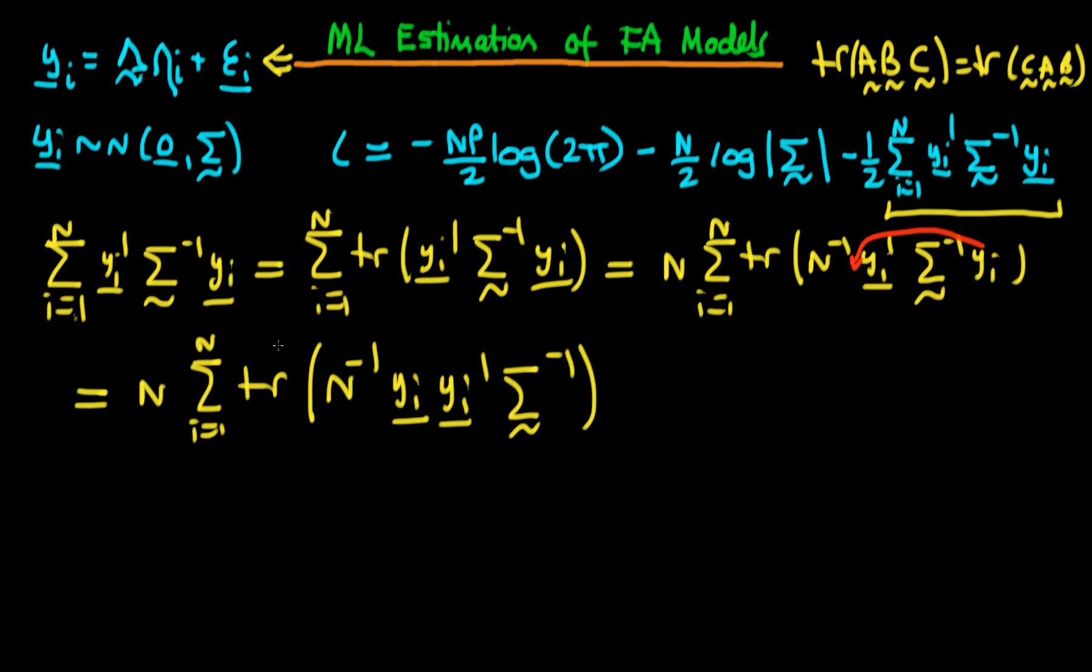You can actually take the trace to the outside of the summation because it doesn't matter whether you take the trace of the sum or sum the traces of the individual elements. So this is n times the trace of the sum from i equals 1 to n of n to the power minus 1 yi times yi transposed times the inverse of sigma.